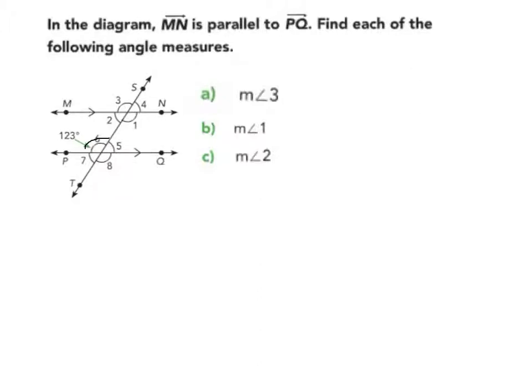I see here that I have corresponding angles. My corresponding angles, since MN is parallel to PQ and TS is a transversal, are going to be congruent. So the measure of angle 3 is going to equal the measure of angle 6, which is 123 degrees.